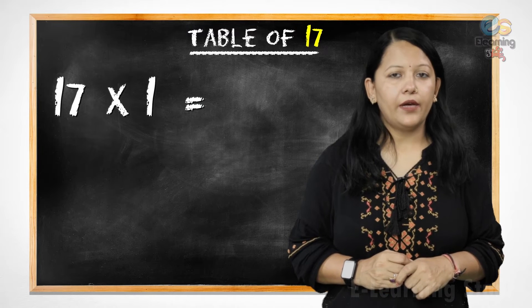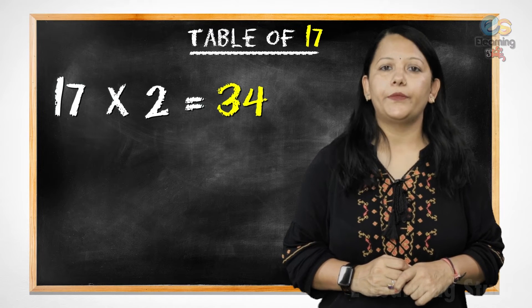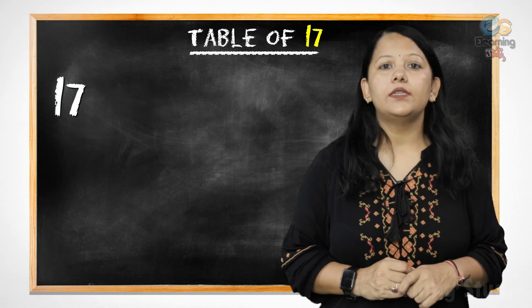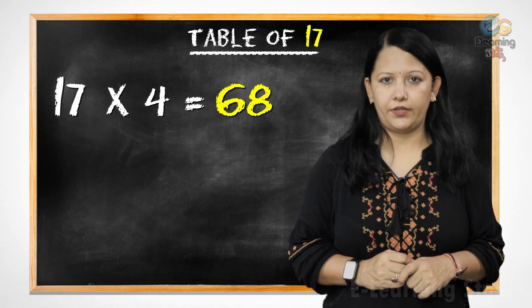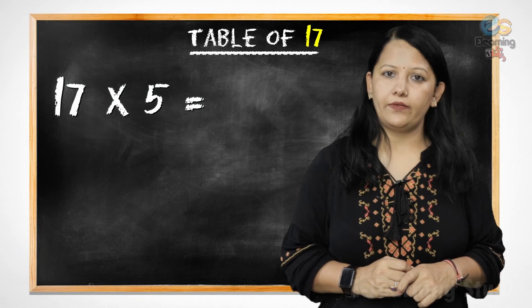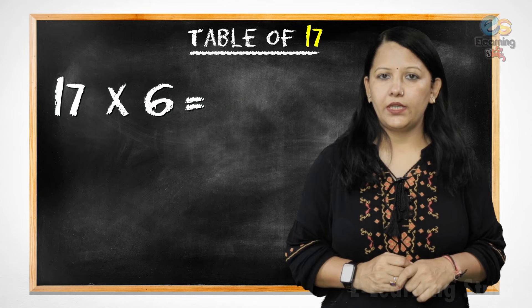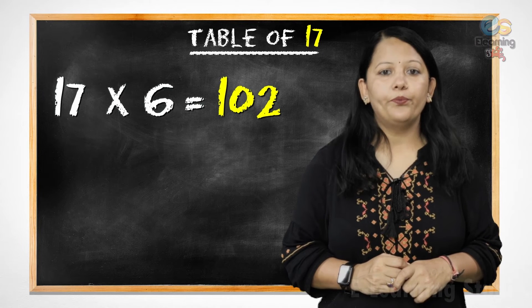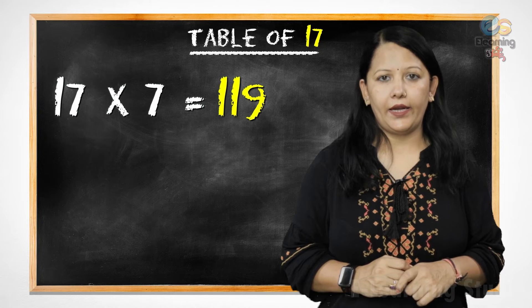17 ones are 17, 17 twos are 34, 17 threes are 51, 17 fours are 68, 17 fives are 85, 17 sixes are 102,